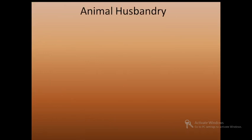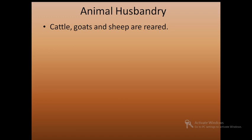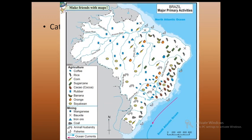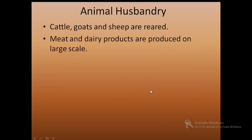Next we will study about animal husbandry. In the savannah grasslands in the southern part of Brazil, cattle, sheep and goat are reared. Cattle are reared in the savannah grasslands as well as in the southern part of Brazil. Meat and dairy products are produced on a large scale in Brazil.